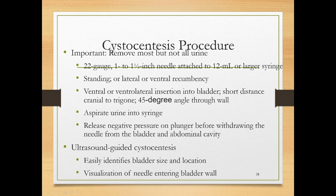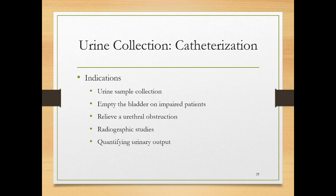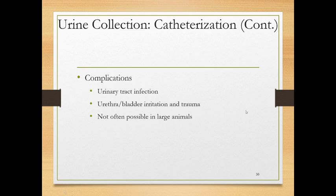Urinary catheterization is done more commonly to empty the bladder in an impaired patient, relieve a urethral obstruction, perform a radiographic study with contrast material, or quantify urinary output. Complications include urinary tract infection, urethral or bladder irritation and trauma. Many large animals — particularly ruminants and pigs — can't be catheterized easily due to the sigmoid flexure of the penis. Clean the prepuce or vulva twice and dry it; wear sterile gloves; pre-measure the catheter externally to know how far to insert it.